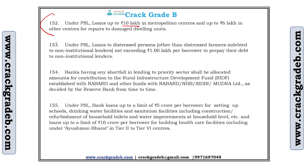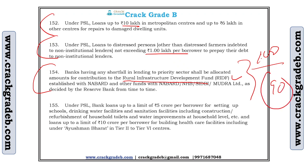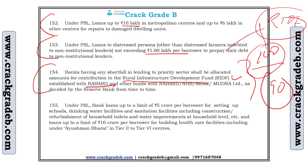If a bank has any shortfall in lending to the priority sector, the shortfall amount shall be contributed to RIDF — Rural Infrastructure Development Fund. For example, if the PSL target is 100 rupees and the bank could only lend 90, the remaining 10 rupees will go to RIDF. RIDF money is used as per instructions from NABARD, since NABARD established it.